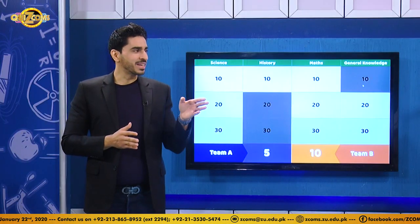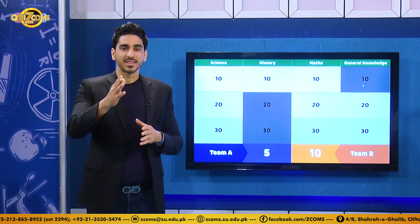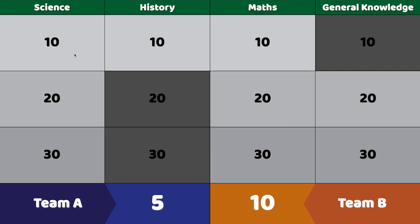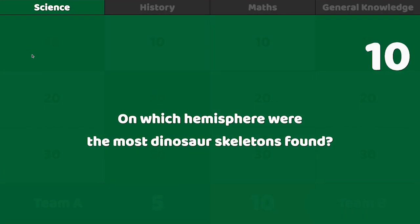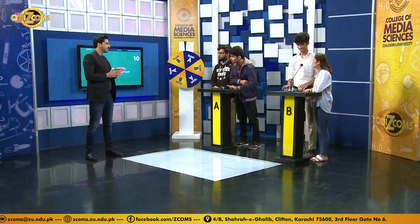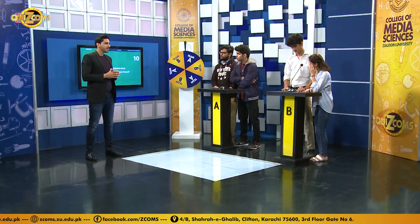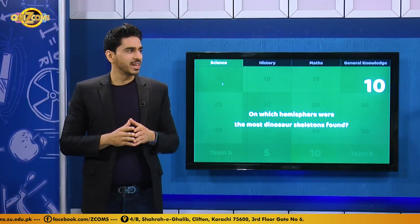Team B chooses science for 10. The question: on which hemisphere were the most dinosaur skeletons found? Team A buzzes and answers the northern hemisphere. That is correct! Team A jumps back into the lead. Well done.